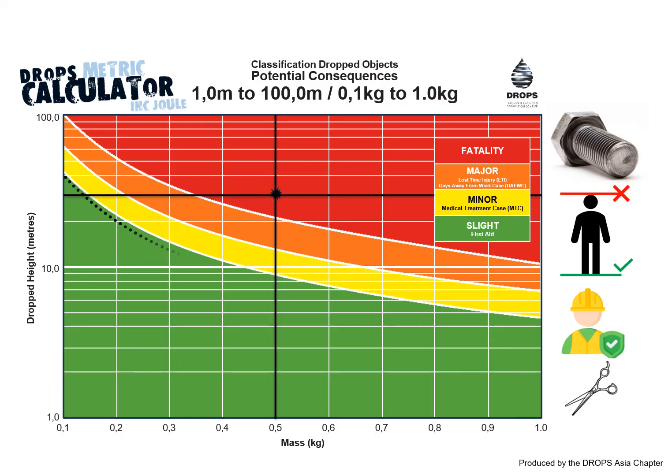One key concept is the 40 joule rule. Any blunt object that achieves 40 joules or more in fall energy is likely to result in a recordable incident if it impacts an unprotected human body.